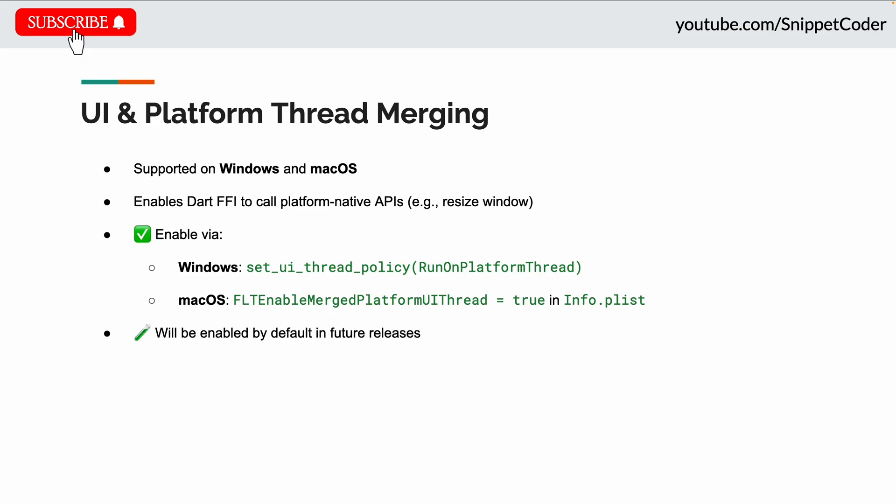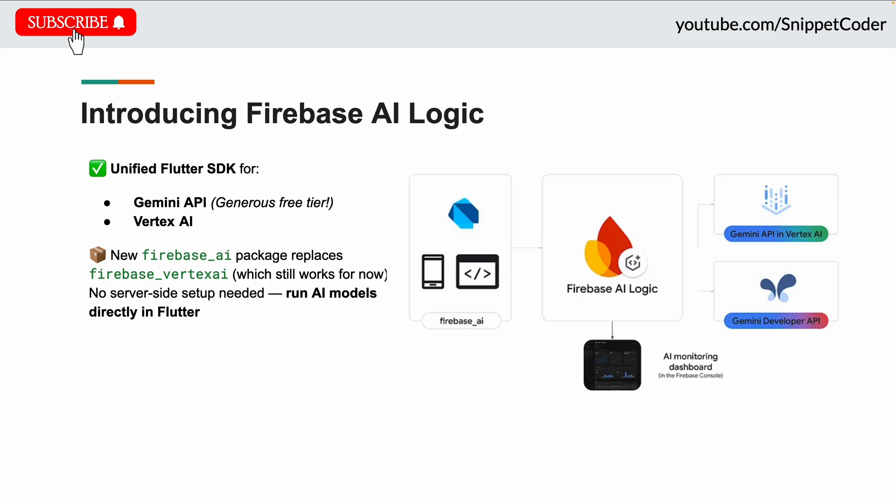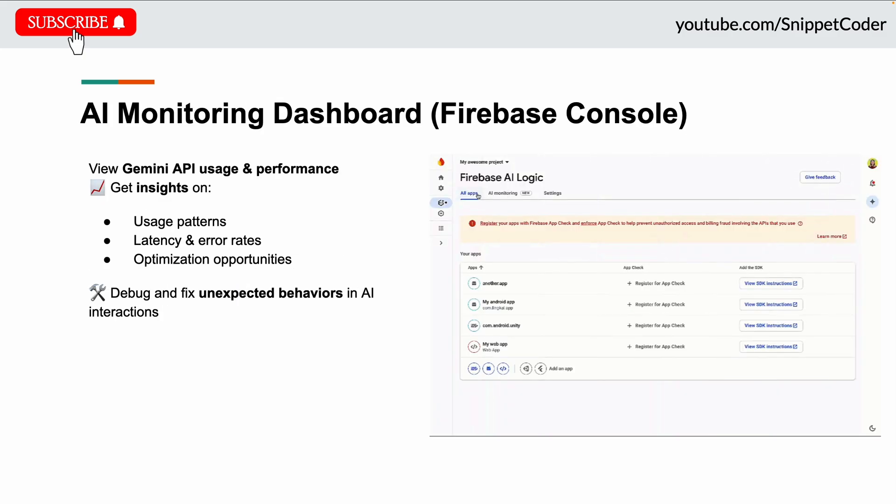Flutter now supports Firebase AI Logic — a new SDK that gives access to both the Gemini AI API and Vertex AI through a single package, firebase_ai. This lets us build generative AI features directly in our Flutter application with no server required. You also get the benefit of a generous free tier and seamless integrations.